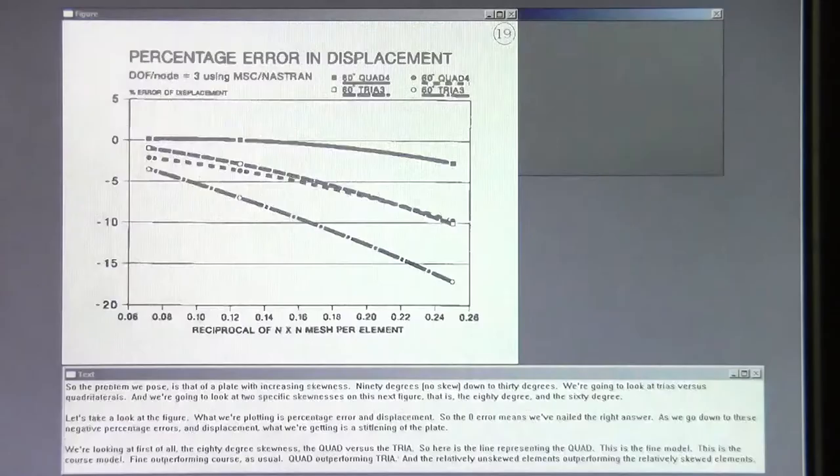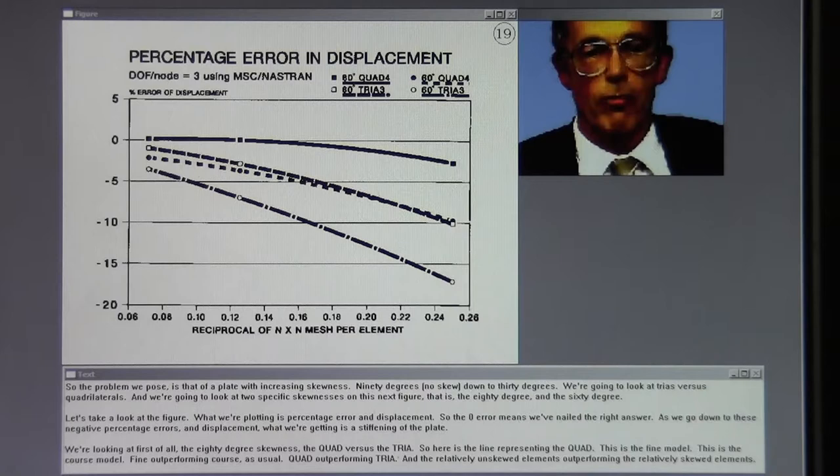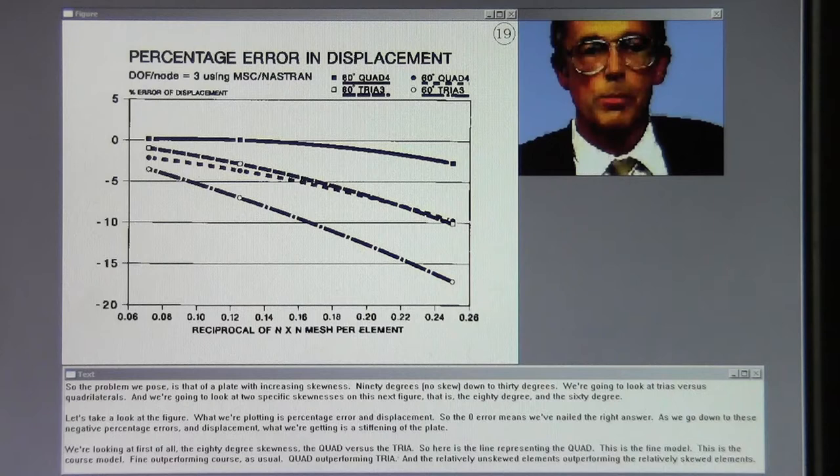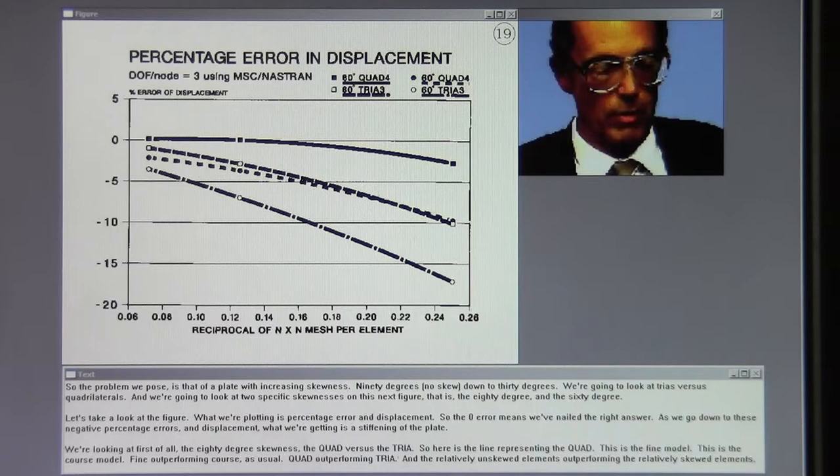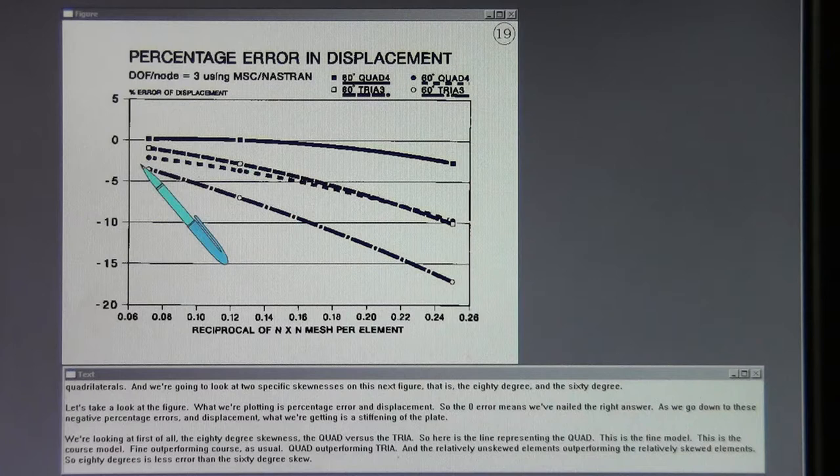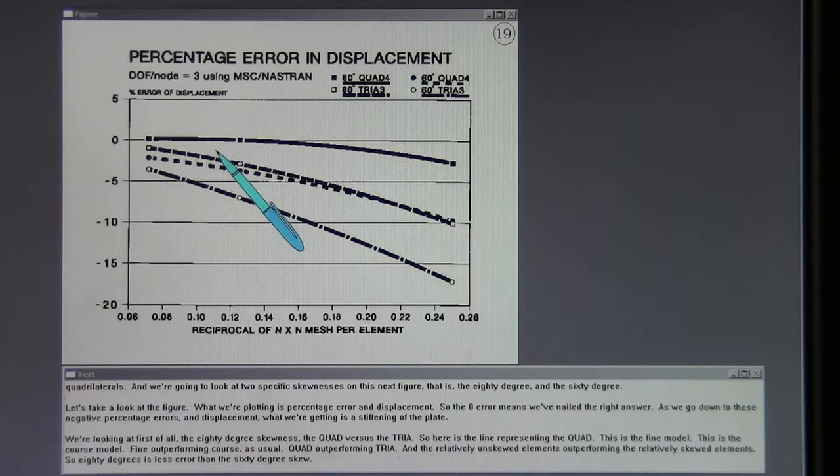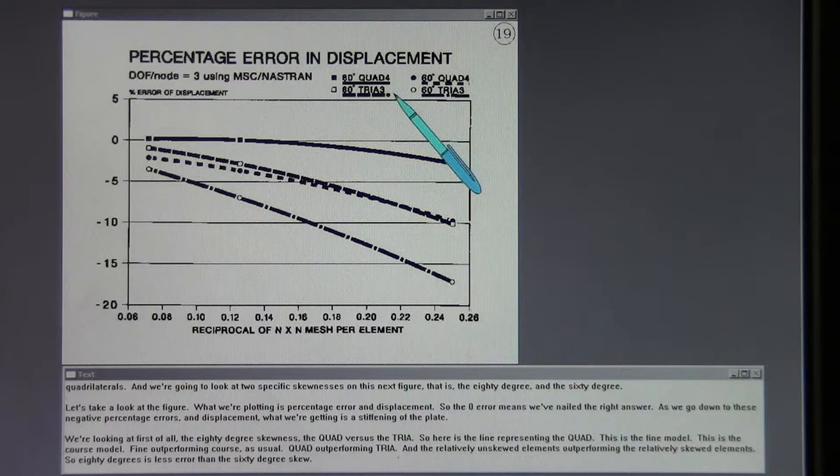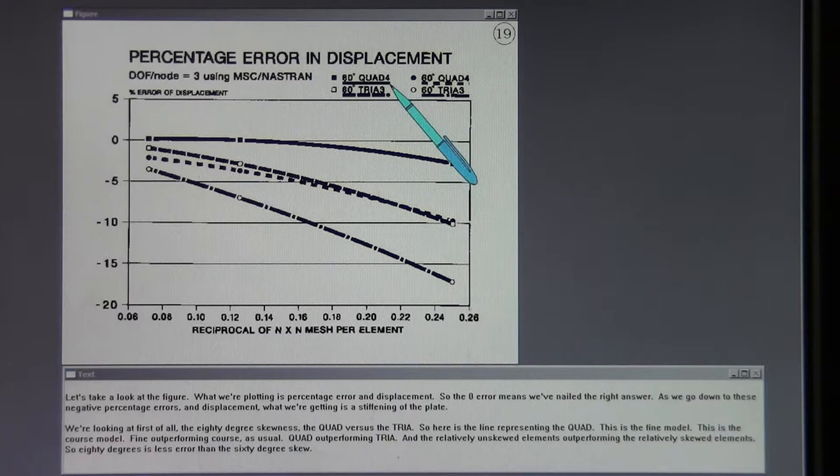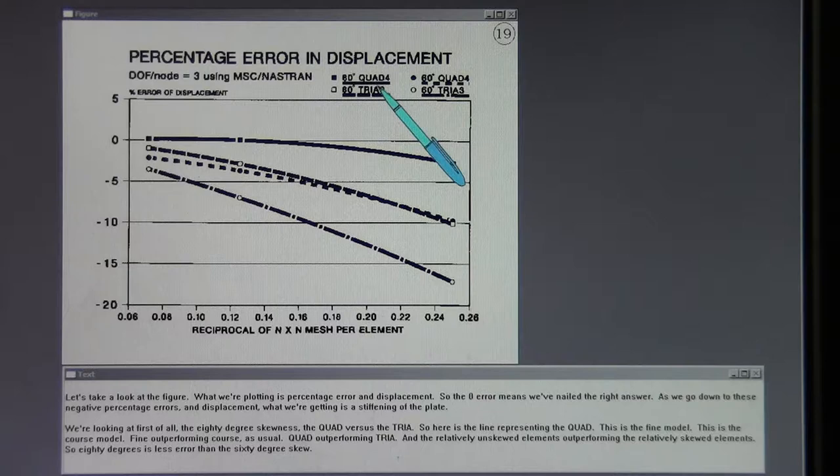So the problem we pose is that of a plate with increasing skewness, 90 degrees, no skew, down to 30 degrees. And we're going to look at trias versus quadrilaterals. And we're going to look at two specific skewnesses on this next figure, that is the 80 degree and the 60 degree. Let's take a look at the figure. What we're plotting is percentage error and displacement. So the zero error means that we've nailed the right answer. As we go down to these negative percentage errors and displacement, what we're getting is a stiffening of the plate. We're looking at first of all the 80 degree skewness, the quad versus the tria. So here is the line representing the quad. This is the fine model. This is the coarse model. Fine outperforming coarse as usual. Quad outperforming tria. And the relatively unskewed elements are performing the relatively skewed elements. So 80 degrees is less error than the 60 degree skew.